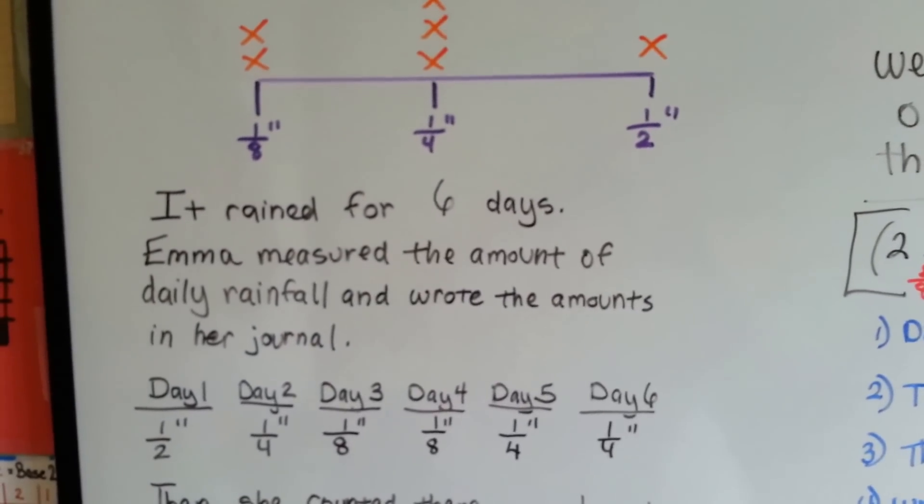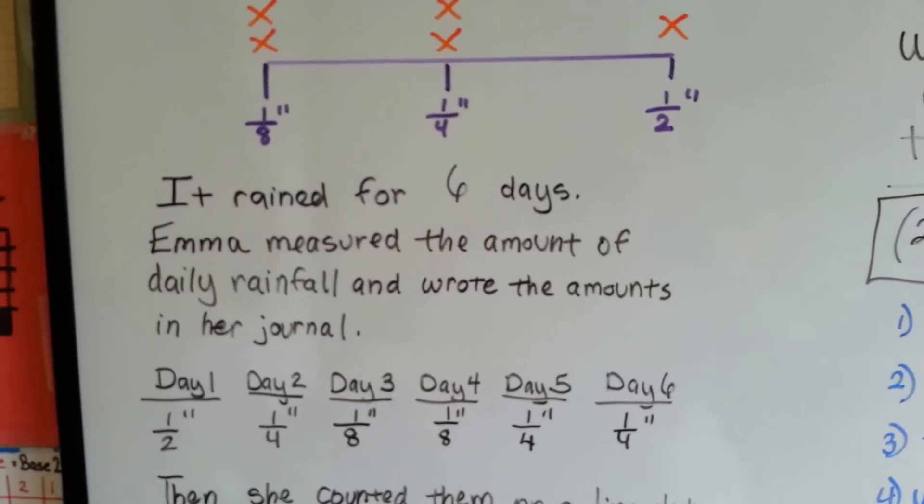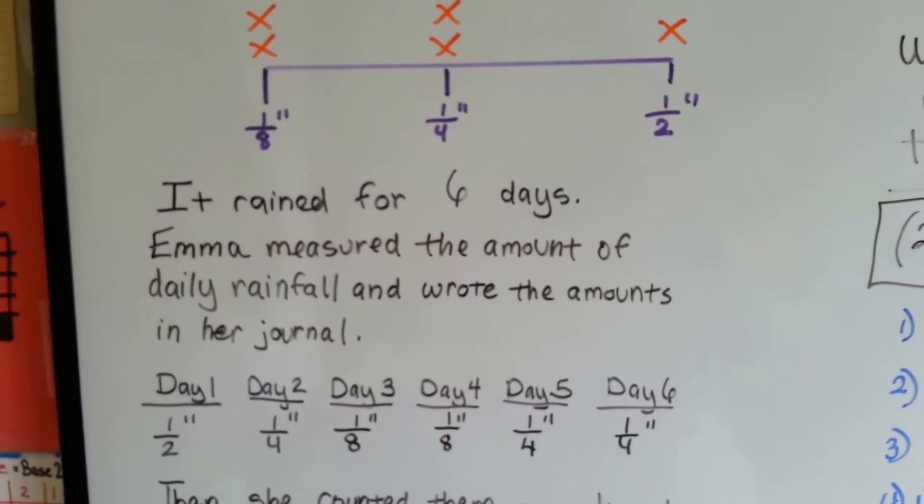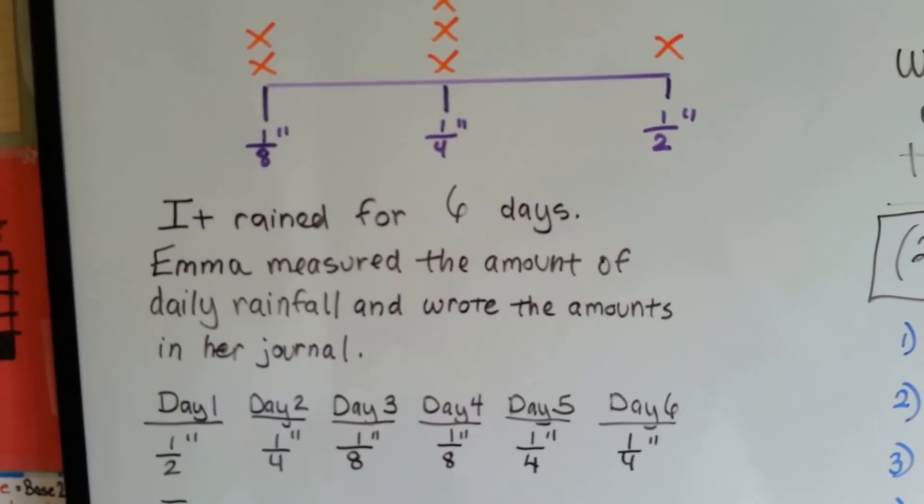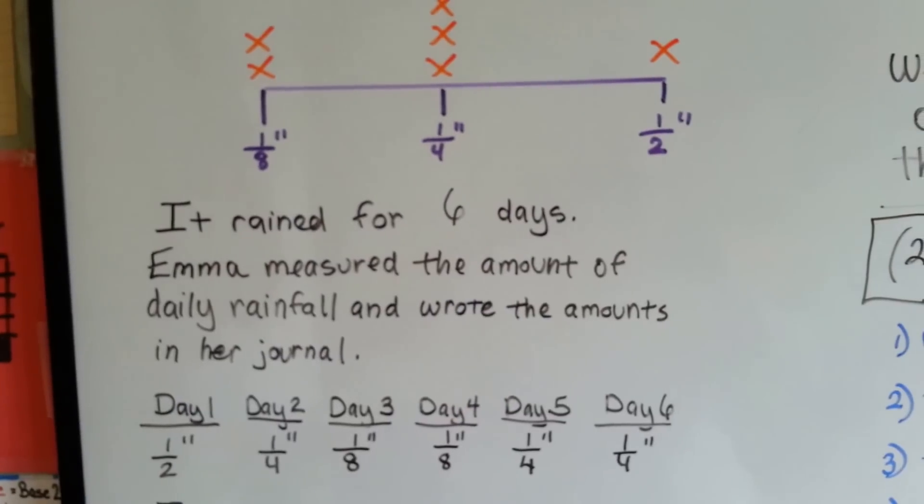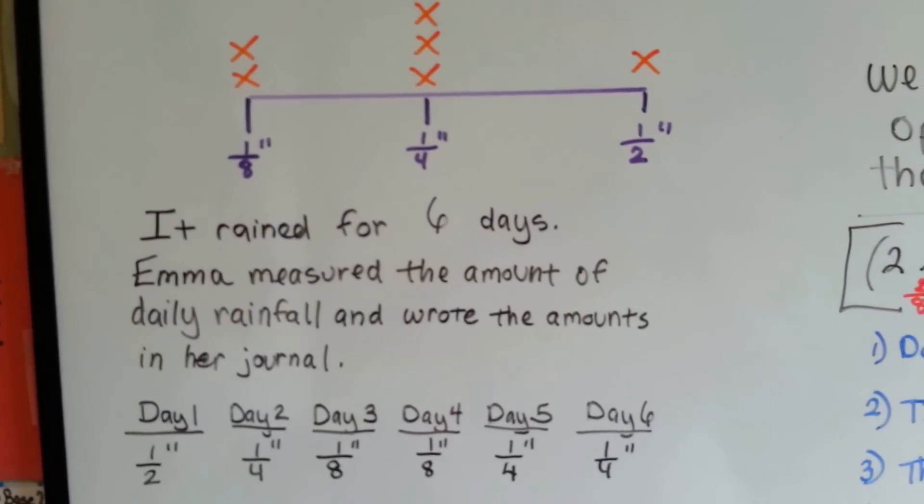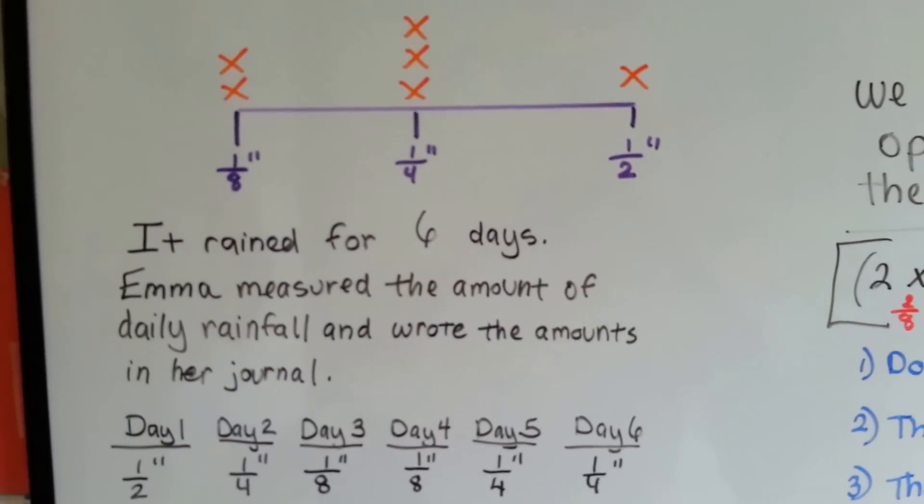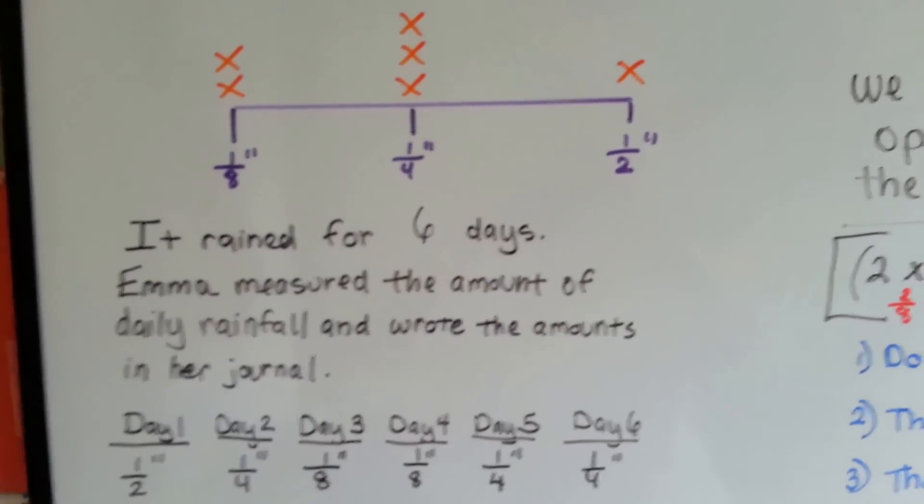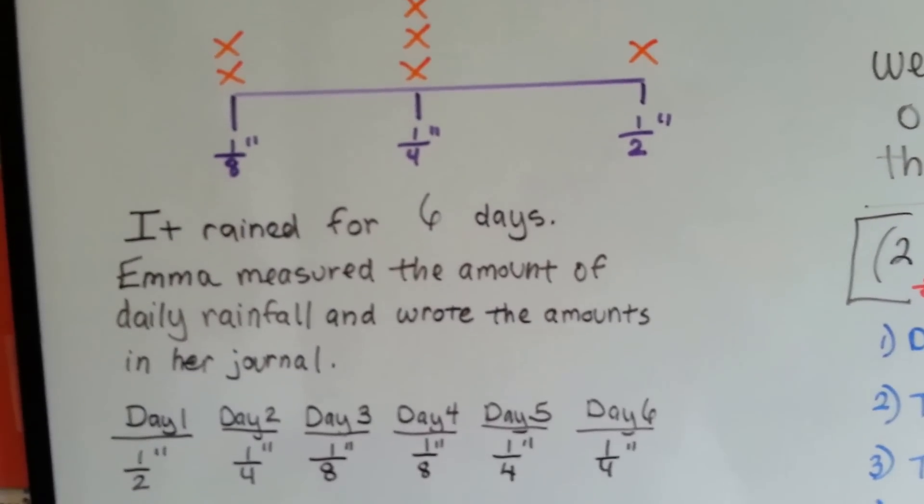Well, it rained for six days and Emma measured the amount of daily rainfall and wrote the amounts in her journal. See the six days and the different little inches, quarter inches, eighth inches of rainfall? So she put them on her line plot and you can easily see that she's got two at one-eighth, three at one-fourth, and one and a half inch. And that was the rainfall for the six days.